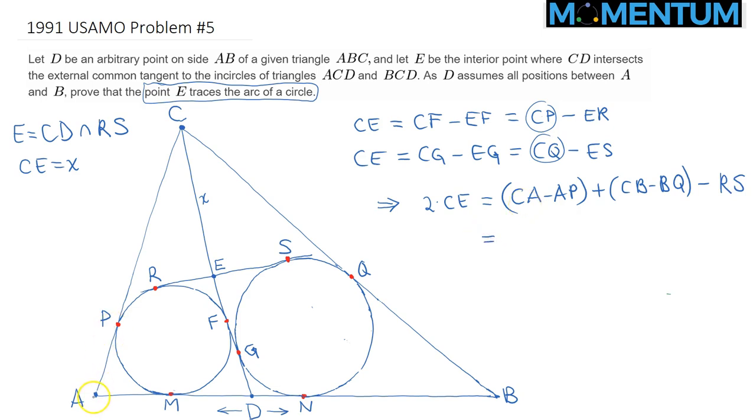CA minus AP. But AP is simply AM. And obviously, CA is just side B. So we can just say B minus. So for the first one, CA is just B, distance B. And AP, we can replace it with AM plus. And CB is in a similar way, it's just length A minus BQ is equal to BN, again, by equal tangents. And finally, RS.